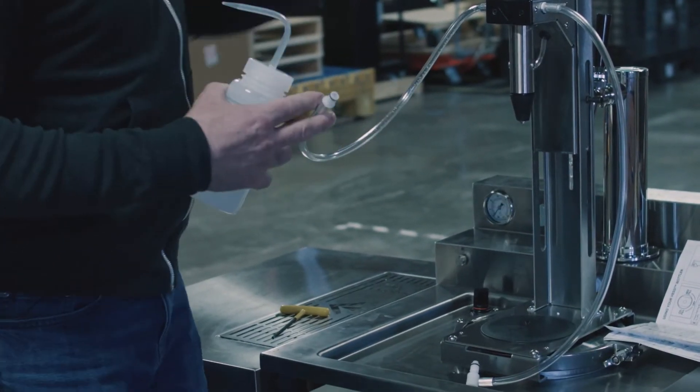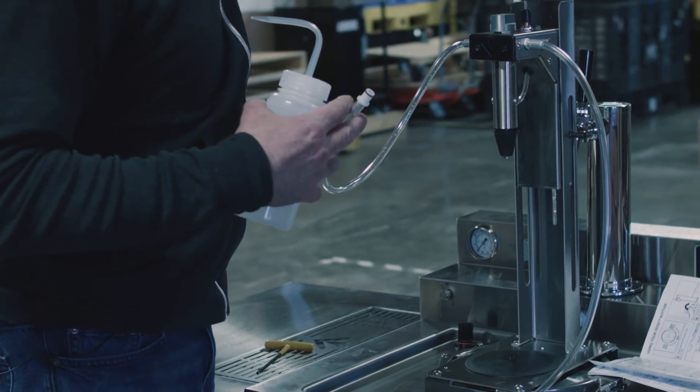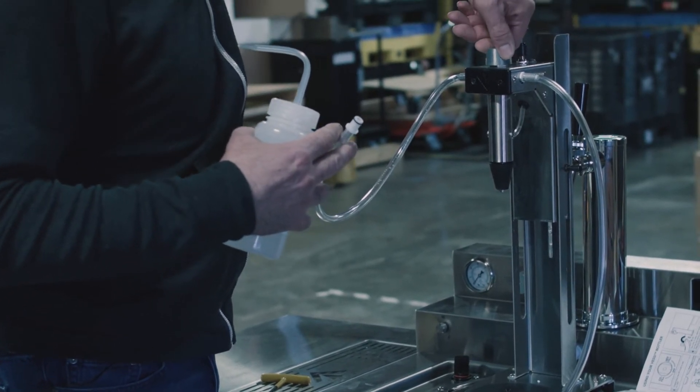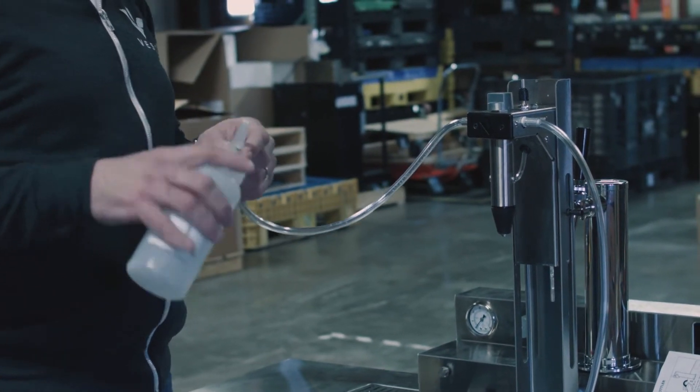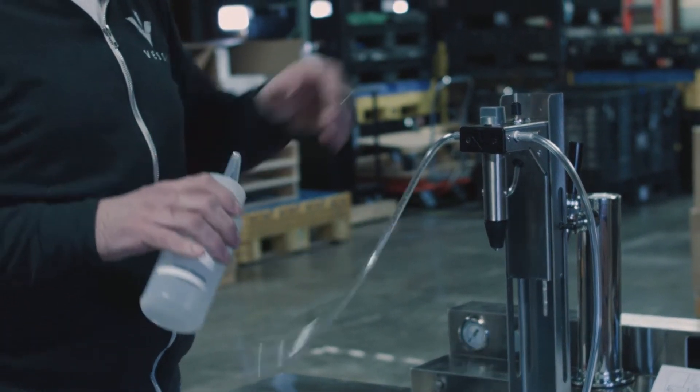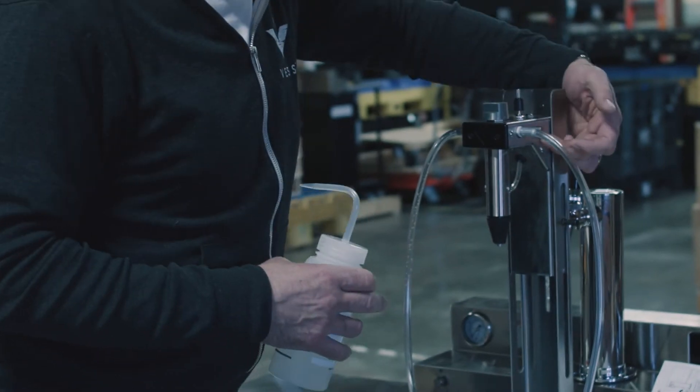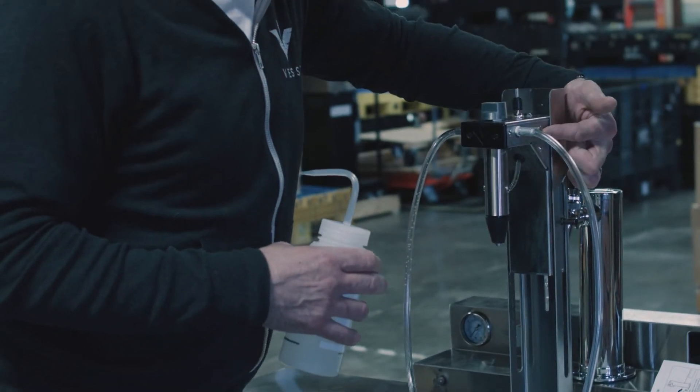You would make sure that this knob is turned into CO2 fill. In this case, we're trying to clean the CO2 line, and we would be squeezing that until we see clear liquid coming out of this port right here.